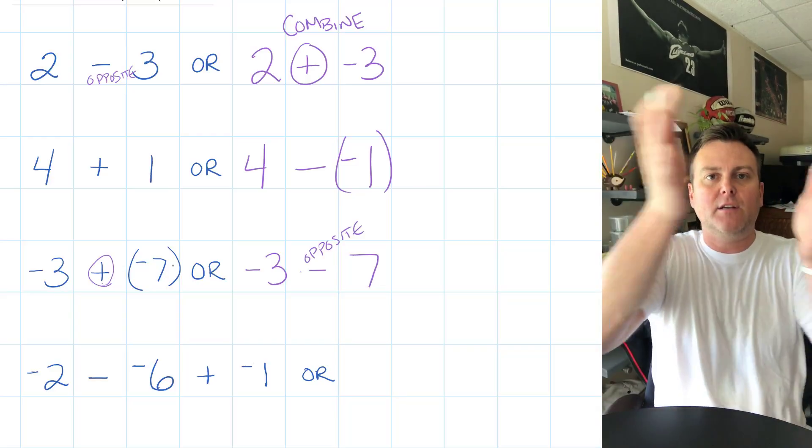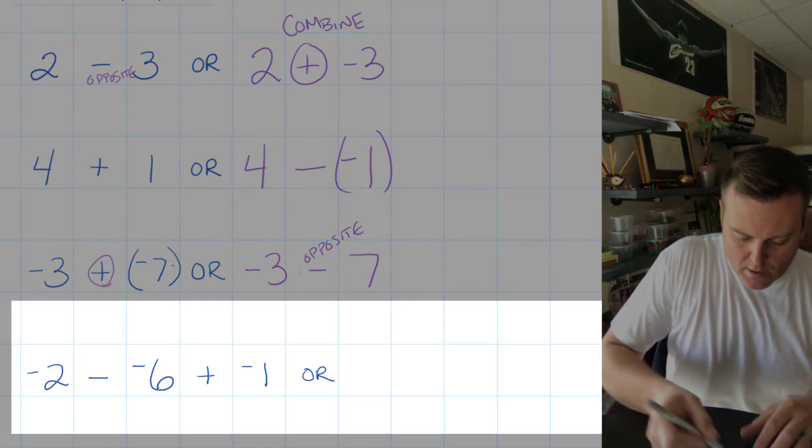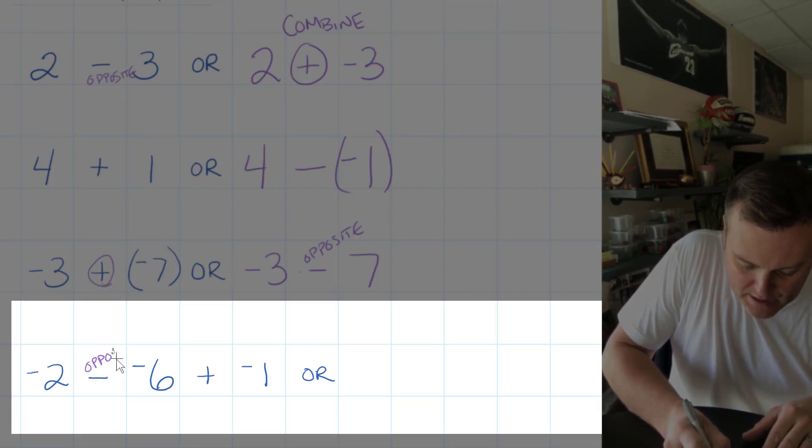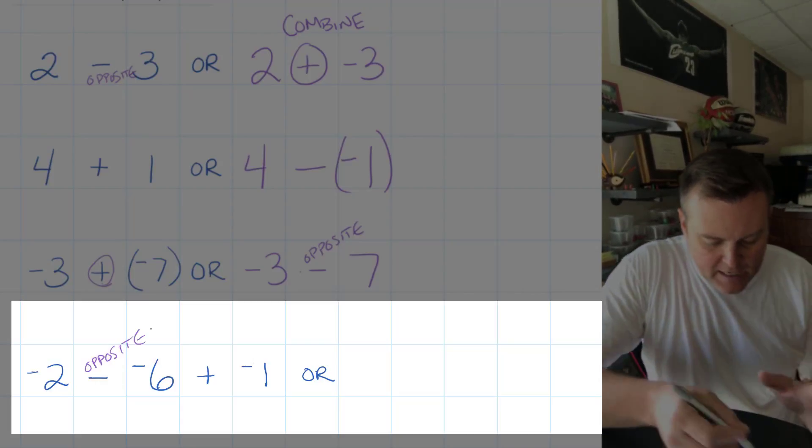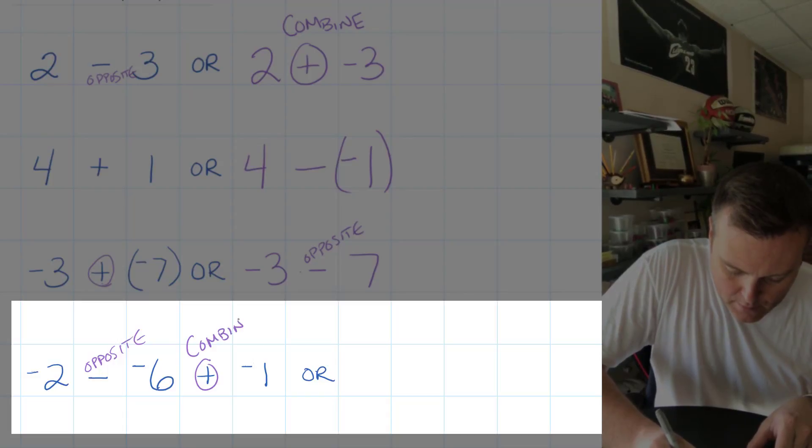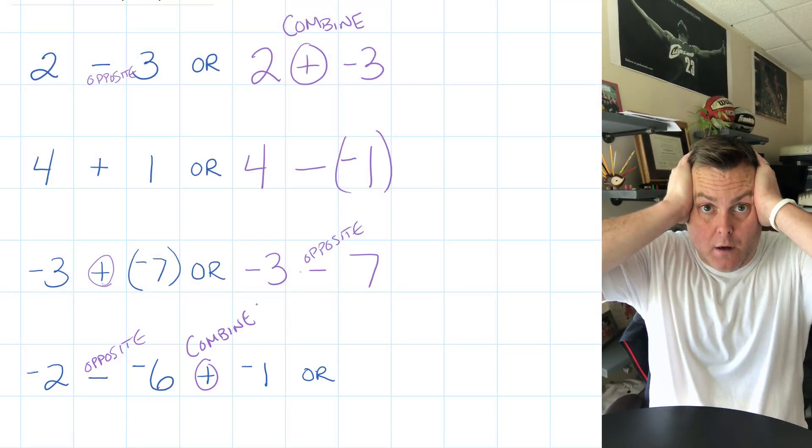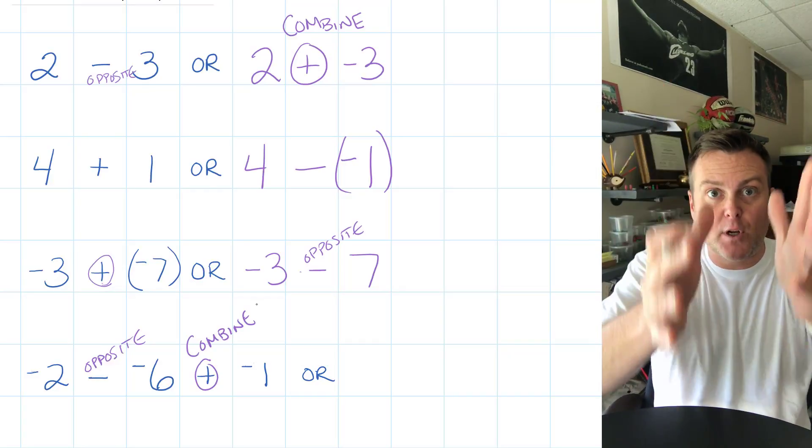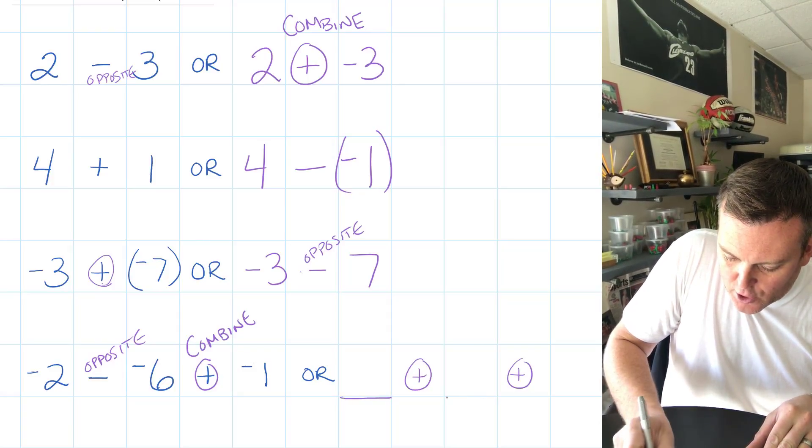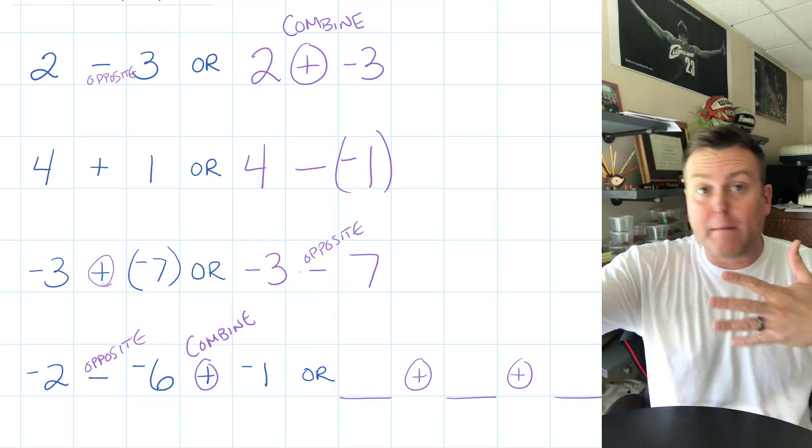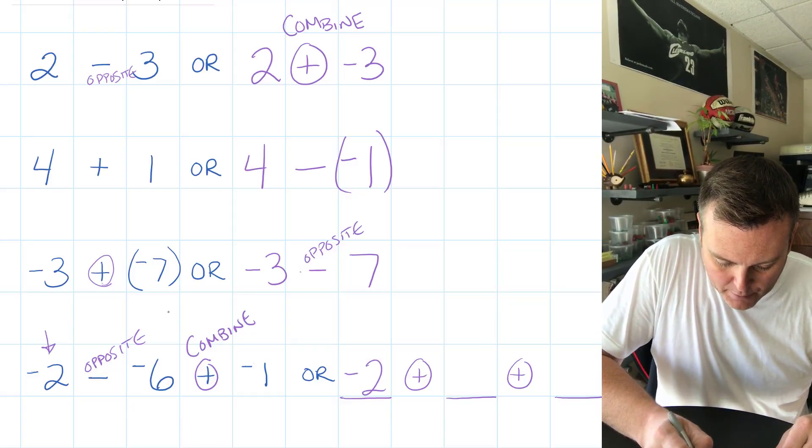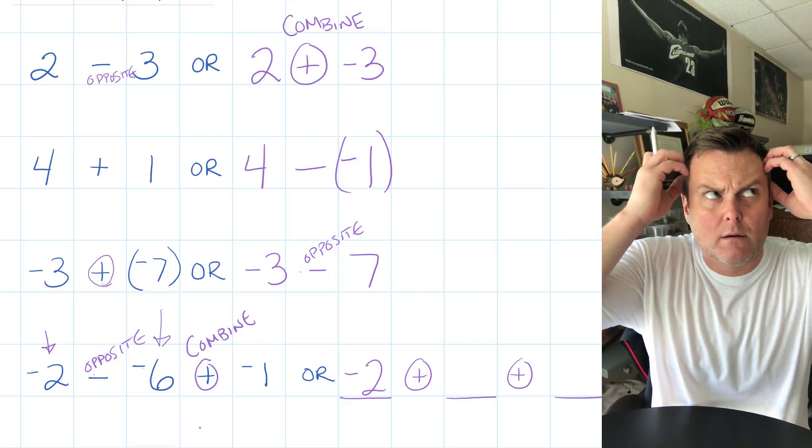Right here, we said that we're combining negative three and the opposite of positive seven, which is negative seven. Again, different ways they'll show it to you. And now I'm going to give you three terms. I've got -2 minus, which I'm going to write the word 'opposite' there because I want negative two and the opposite of -6, and then we're going to combine that with -1. I got three numbers. Here's the first thing I'm going to do: I'm going to put two combining plus signs here.